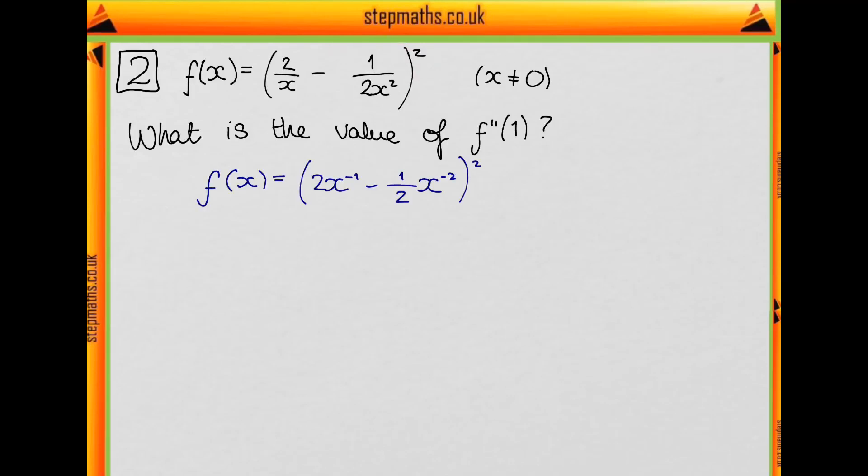So I've just written it out again, but in a slightly different way. So instead of 2 over x, I've written 2x to the minus 1. I always do this because it's a lot easier to differentiate using the drop the power and multiply rule than if you have dividing going on. It's a little bit more complicated to see what's going on. So we're going to differentiate this.